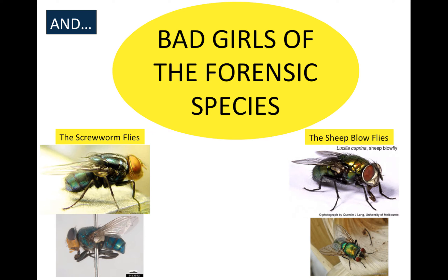What these females will do is if there's a wound on an animal, they'll come in and lay eggs on that wound. The maggots, once they hatch, will start eating the dead tissue — but they don't stop there. They begin eating the live tissue. There's an advantage to this behavior: if you get to the animal before it dies, there's no competition for it, so your offspring will definitely develop. The species at the top is present in North America but actually doesn't cause that many problems, and we're not exactly sure why, though it does cause problems in South America.